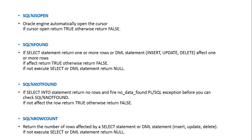In an UPDATE statement, this implicit SELECT obviously returns one or more rows. If it does not fetch any rows, then SQL%FOUND returns false. If it finds at least one row, SQL%FOUND returns true. SQL%NOTFOUND is the complementary of SQL%FOUND — if rows are found it returns false, and if no rows are fetched it returns true.